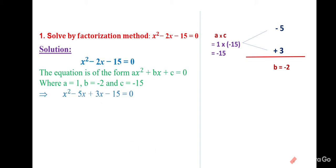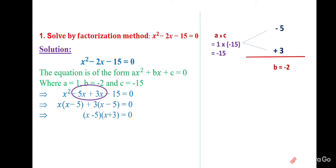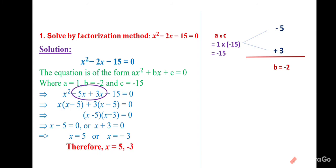So x² − 5x + 3x − 15 = 0. We split −2x as −5x + 3x. Taking x common from the first two terms: x(x − 5). Taking 3 common from the last two terms: 3(x − 5). The brackets are the same. So (x − 5)(x + 3) = 0. Setting each bracket to zero and applying the linear equation concept gives the two solutions.